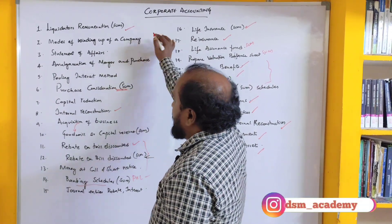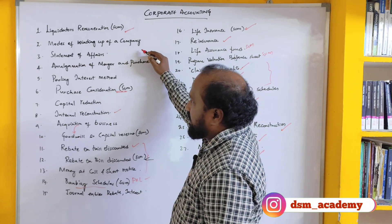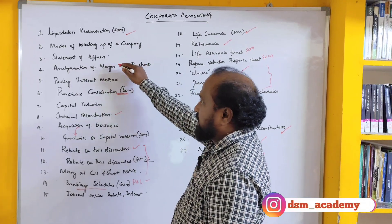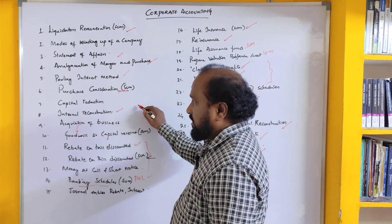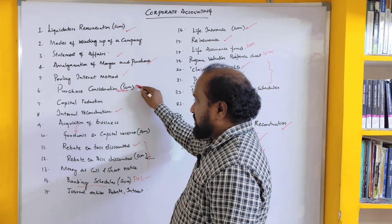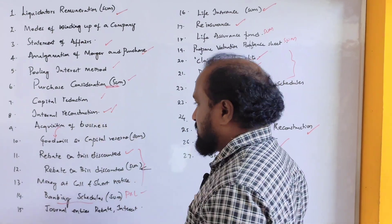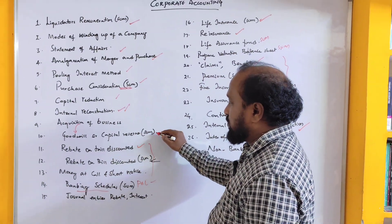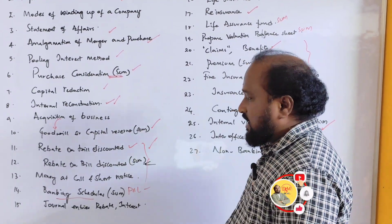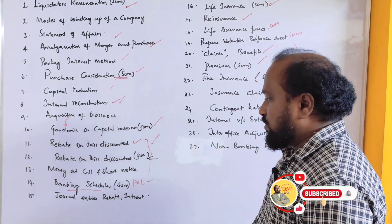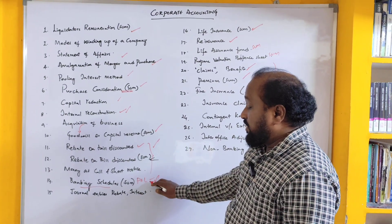For short answers, one question is on liquidator remuneration, and some will be asked on modes of winding up of a company, statement of affairs, amalgamation and merger meaning, pooling of interest method meaning, purchase consideration, capital reduction meaning, internal reconstruction meaning, acquisition of business, goodwill or capital reserve, and rebate on bill discounted. Some will be asked on money at call and short notice, and banking schedules will be asked — prepare banking schedules.